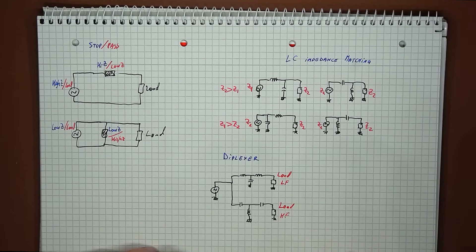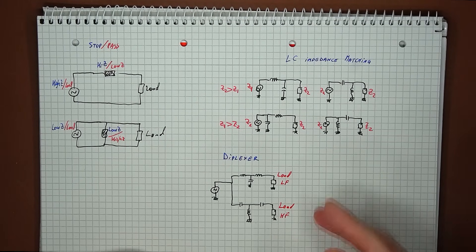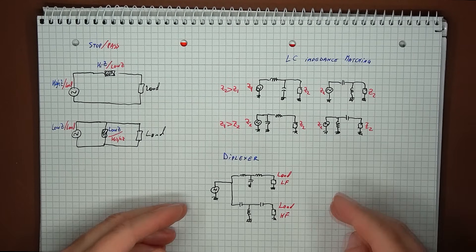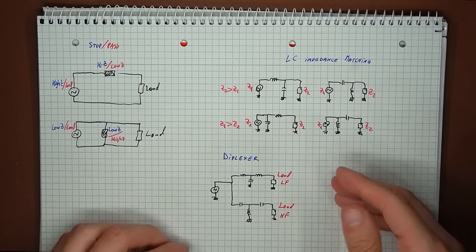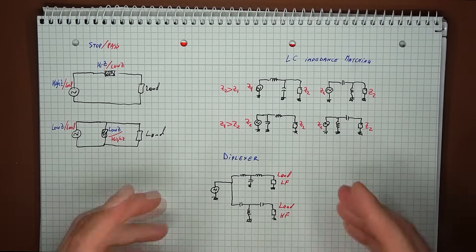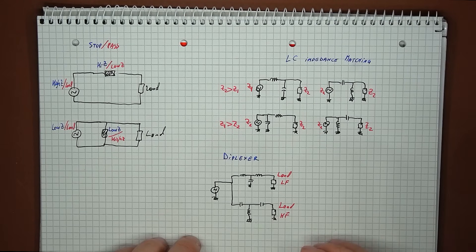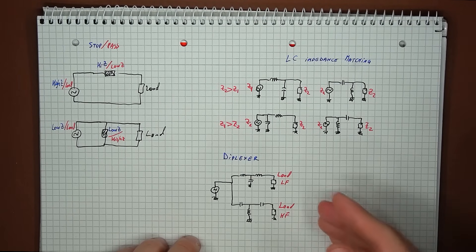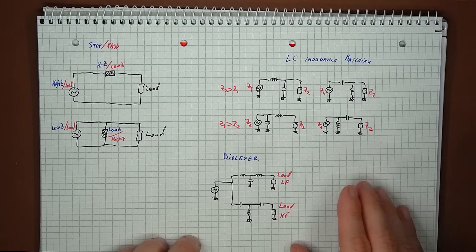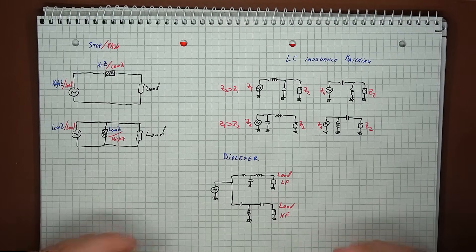Another circuit to highlight is the diplexer. This is built with a high and low pass filter, so the low frequency signals are supposed to go to one load and the high frequency signals are supposed to go to the other load. Here, it is recommended to use series impedances, so T-type filters, since you don't want the blocking filter to take up any of the useful signal which should pass to the other branch. You want to minimize losses, since there is always a target load.